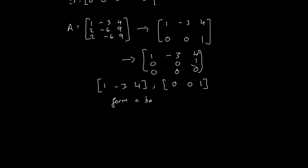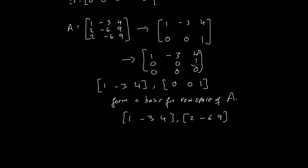These two vectors form a basis for the row space of A. There is a similar way: we can look at the leading ones and find a basis for the column space of A. There is another theorem that allows us to note that the original rows — 1, minus 3, 4 and 2, minus 6, 9 — also form a basis for the row space of A.